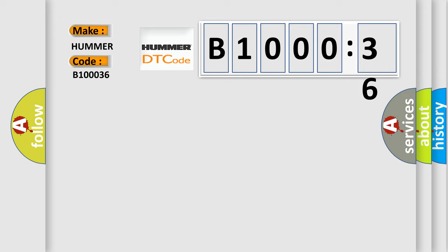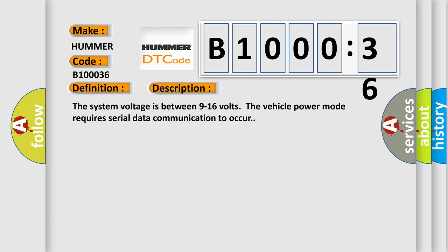The basic definition is lost communication with passenger presence system PPS. And now this is a short description of this DTC code. The system voltage is between 9 to 16 volts. The vehicle power mode requires serial data communication to occur.